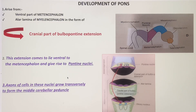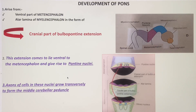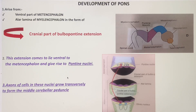The cranial part of the bulbopontine extension consists of cells coming from the alar lamina of the myelencephalon; these form the pontine nuclei. The caudal portion of the bulbopontine extension forms the olivary nuclei. Axons of these cells run transversely to form the middle cerebellar peduncle. These are the three important points related to the development of the pons.